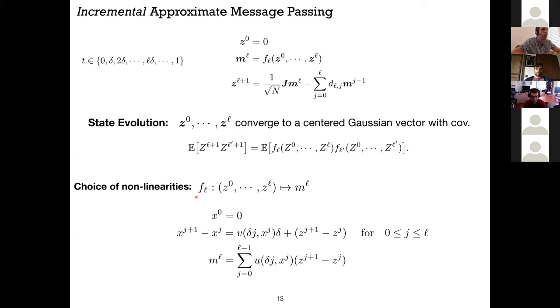So let me choose them in this way. My f_ls are chosen in this way, which basically mimics the SDE and the continuous time dynamics that I showed you before. Okay, so here I have a function v. It doesn't have to be the function that is given by the Parisi formula. And here I have a function u. So these I have to search over these two functions in order to describe the whole class of algorithms that I have.